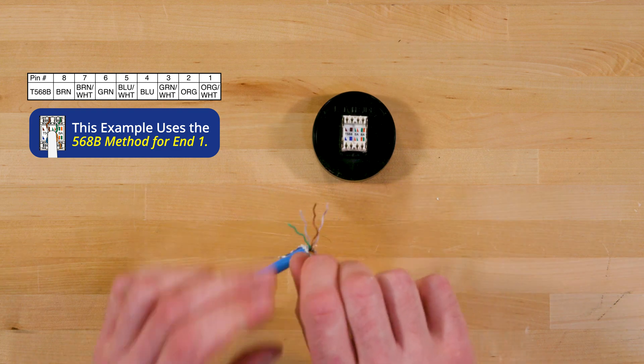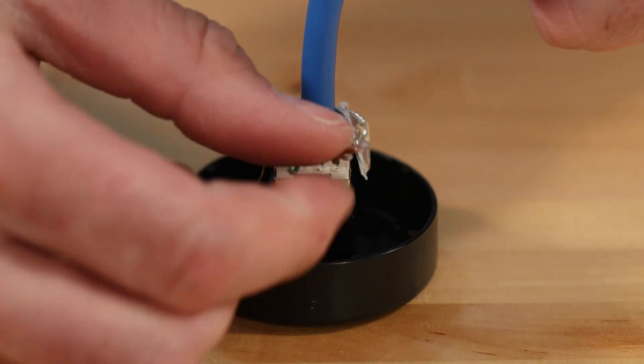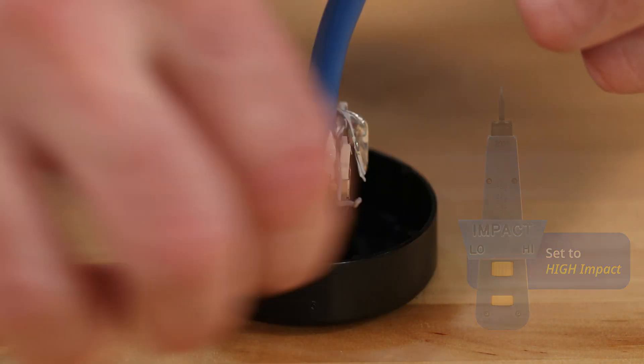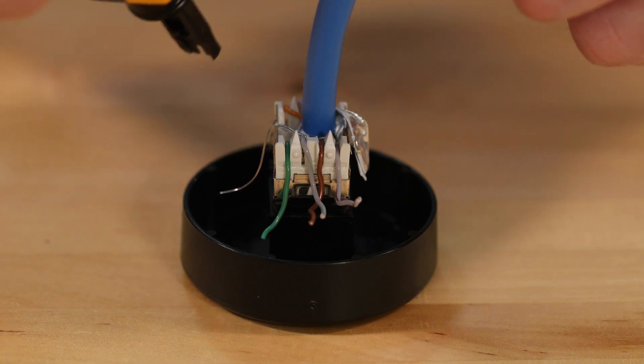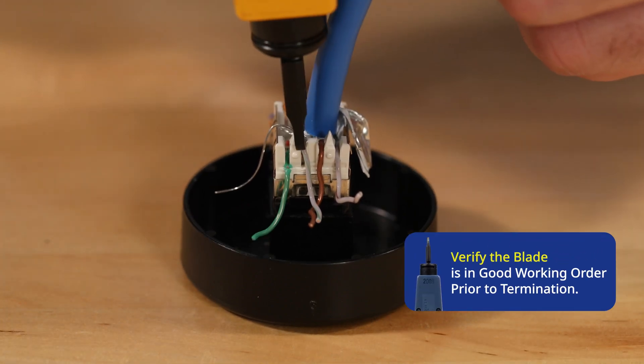Place the conductors into the jack following the correct wiring scheme. With the punchdown tool set on high impact, and with the cut side of the blade facing outward, press the tool down into each slot, cutting each conductor in succession.